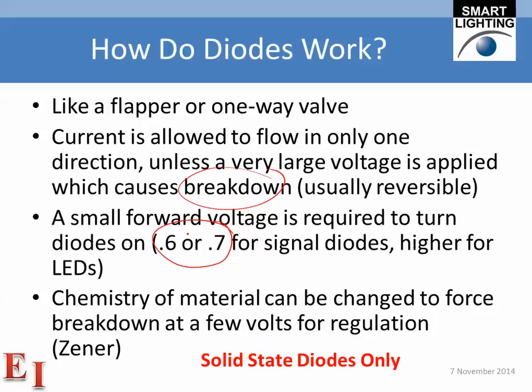Typical forward voltages for signal diodes are less than 1 volt — about 0.6 to 0.7 volts. It's significantly higher for LEDs; for blue and green LEDs, it's over 3 volts. The breakdown can actually be put to use through the Zener effect — you can make the breakdown occur at a few volts. If you use that device reverse biased, it will actually regulate the voltage and not allow it to go above that value, keeping the voltage right at that value.